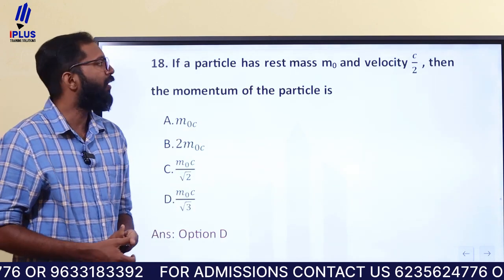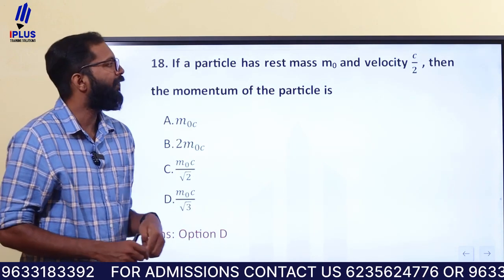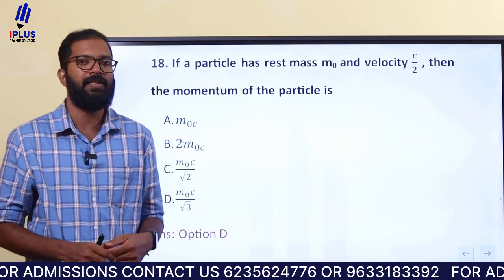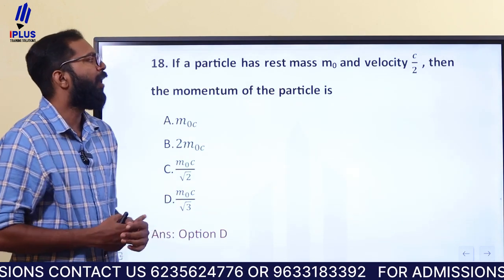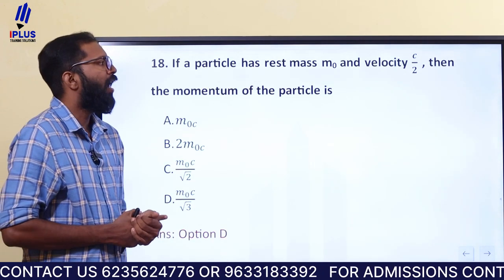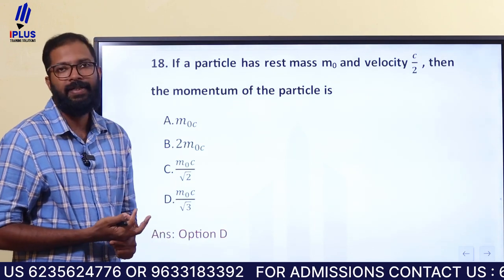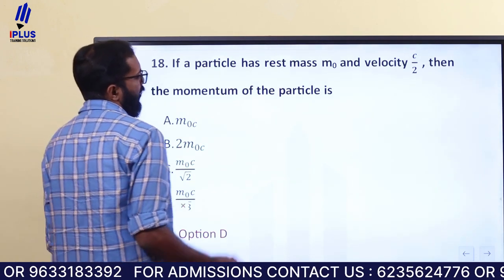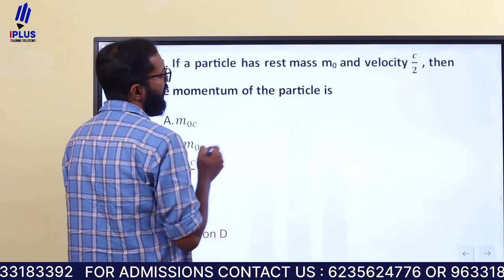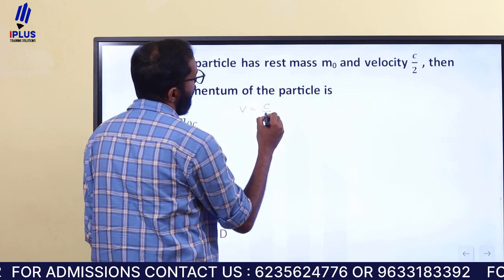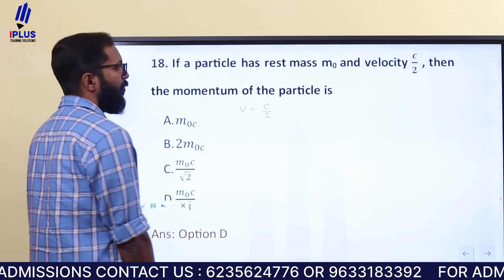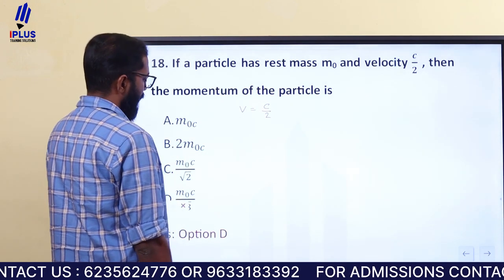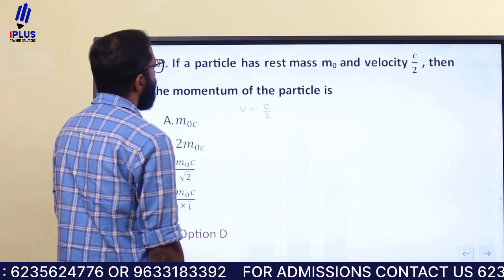If a particle has rest mass m₀ and velocity c by 2, then what is the momentum of the particle? The particle has rest mass m₀, and velocity V is equal to c by 2. We want to find the momentum of the particle.